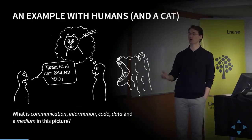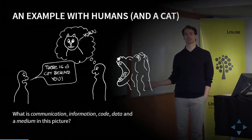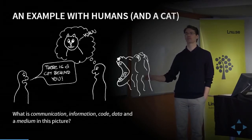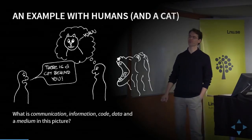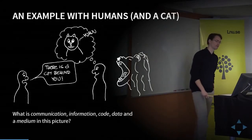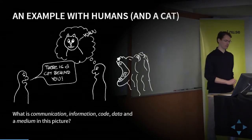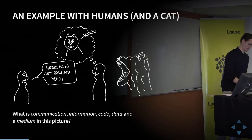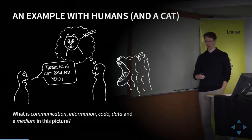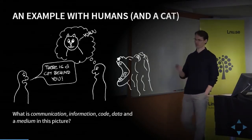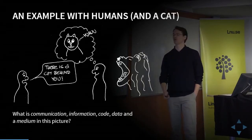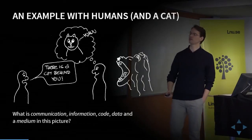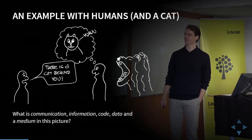The phrase 'There is a cat behind you' is the data — that is a specific instance of the code. And the medium, of course, is the air between the persons that carries the sound waves from the mouth of one to the ear of the other, although he has no ears in this picture.